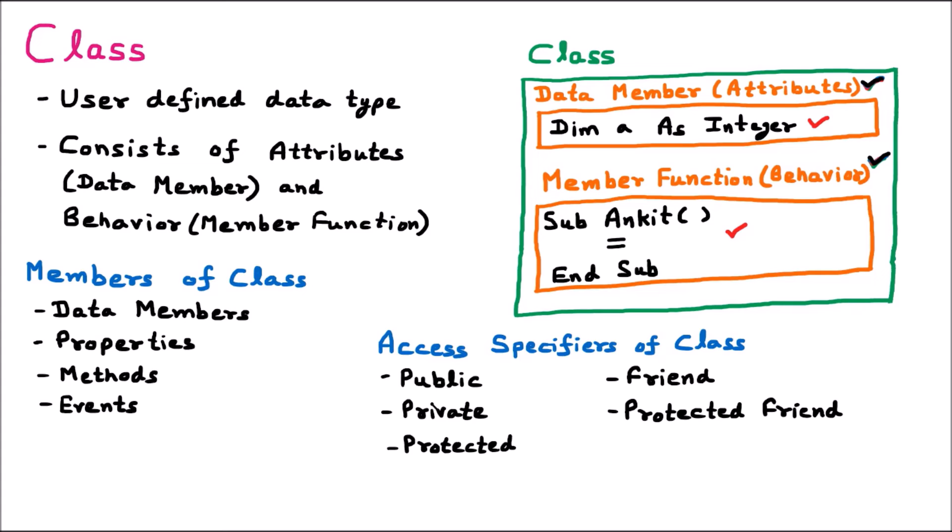So these are the access specifiers. Based on our requirement, we put them with the class and make that class available to other people accordingly. Access specifier determines who can access — whether it is private, protected, public, friend, or protected friend.